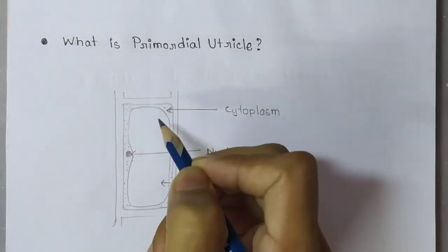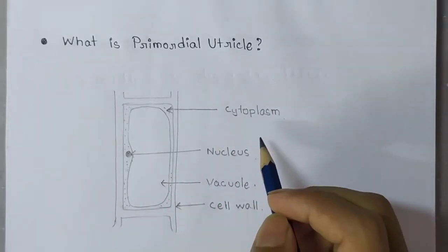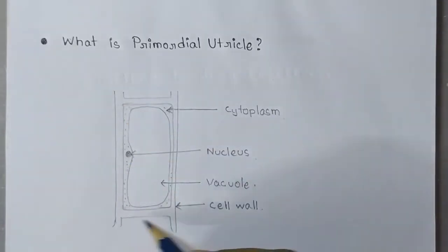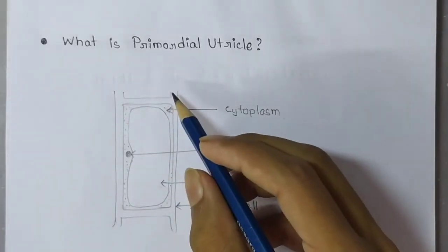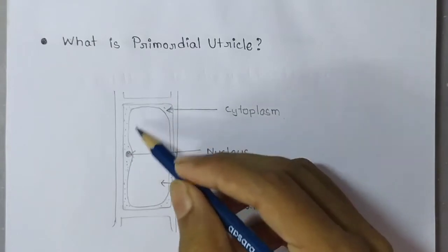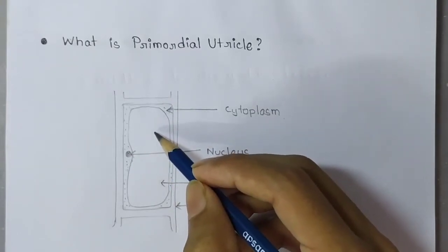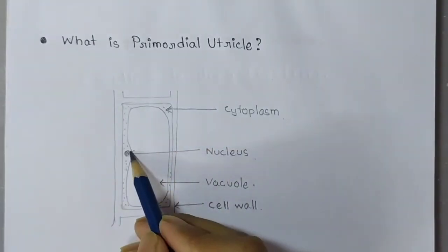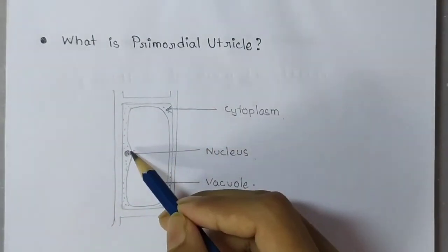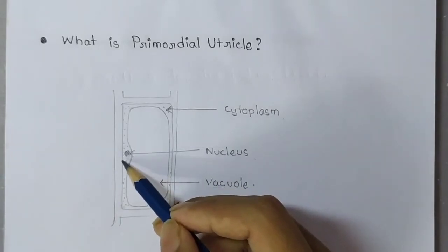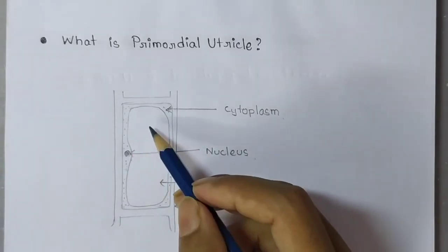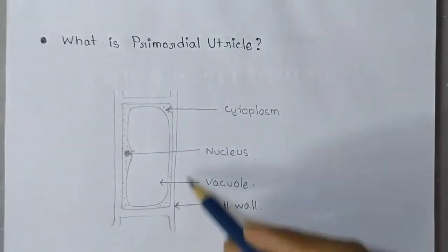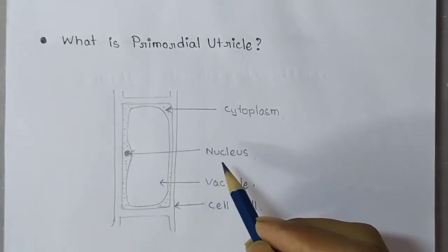Let's know what is primordial utricle. When the vacuole inside a plant cell becomes very big, the nucleus along with the cytoplasm comes closer to the cell wall and takes a ring shape. At this moment, the condition of the plant cell is called primordial utricle.